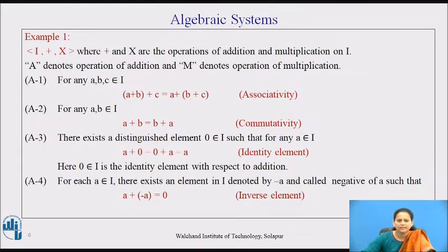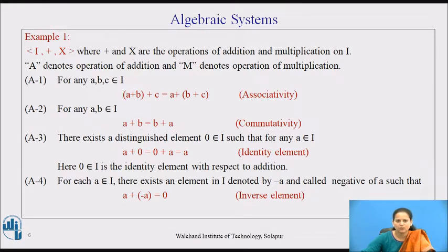A2 is a property: for any a, b belonging to I, a + b = b + a, and it is known as commutativity. A3 states: there exists a distinguished element 0 belonging to I such that for any a belonging to I, a + 0 = 0 + a = a, and it is called the identity element.